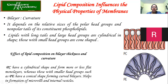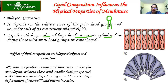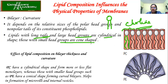Lipids with long tails and large head groups are cylindrical — for example, PC. In the figure, you can see PC has a large polar head group because of the choline group attached to the phosphate, and they also have long saturated fatty acid tails. Because of this, the shape of the plasma membrane is going to be flat.